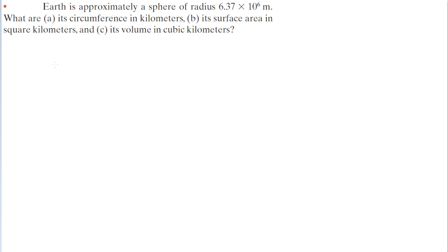The first part of the problem asks us to find the circumference of the Earth given its radius. We're told that the Earth's radius, or r sub e, is approximately 6.37 times 10 to the power of 6 meters.